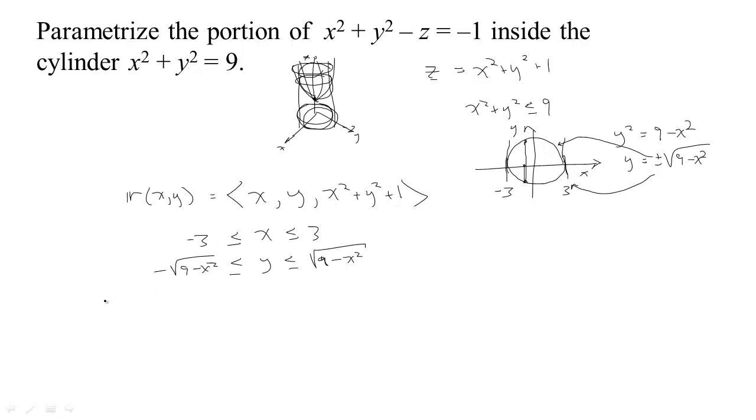A lot of times when we have a parameterization, the two parameters will be u and v in the book, which is just a matter of changing names. R of u and v: the x coordinate is given by u, the y coordinate by v, and the z coordinate by u squared plus v squared plus 1. We just rewrite the bounds in terms of these two parameters, u and v. This is just really a matter of changing the names.